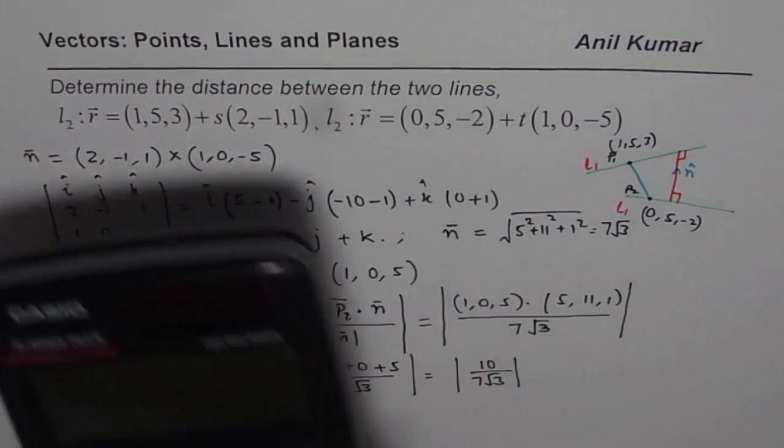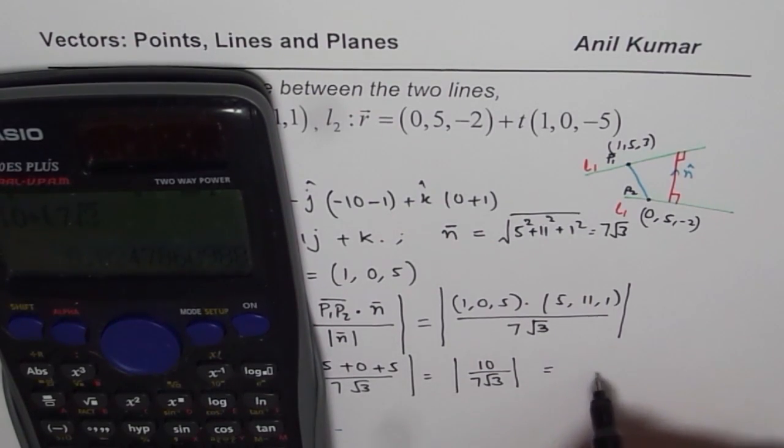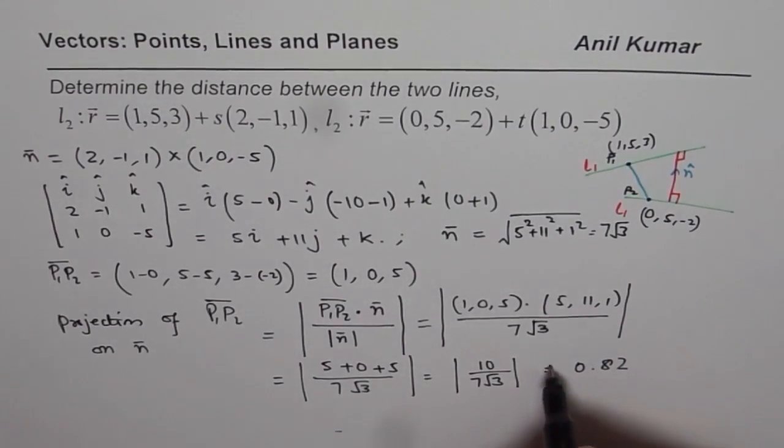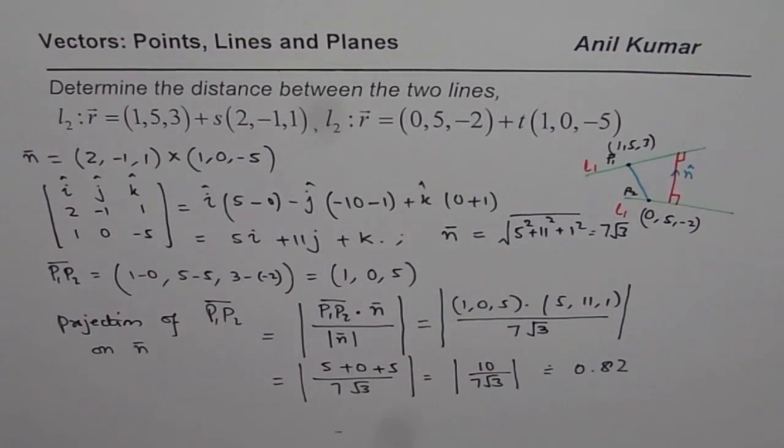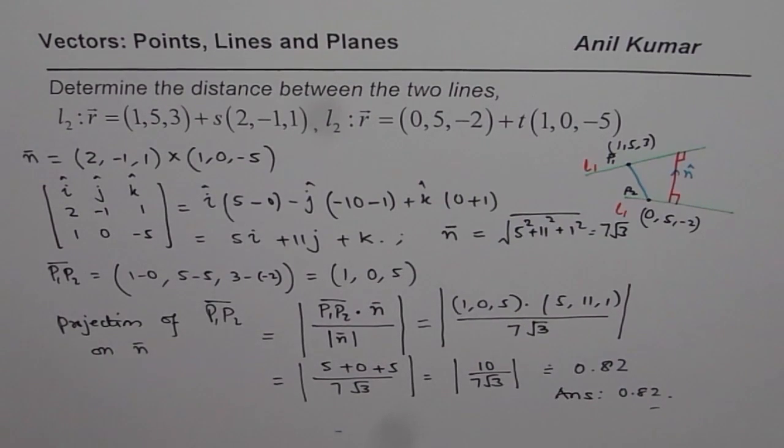Now, we can use the calculator. 10 divided by 7√3. And we get, let us write it in decimals, 0.82. So, approximately 0.82 is the distance between these two lines. So, that is our answer. I hope that helps. Thank you, and all the best.